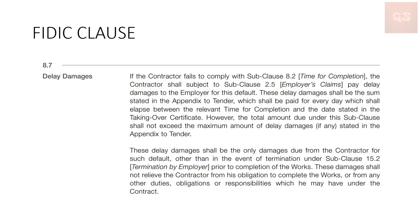Normally the limit will be around 10% of the contract amount. When you fill in the tender documents and the appendix to tender, you can accept the delay damages being put forth by the client. You may also reject it and put forward your own amounts that you think are fair. For example, if the client proposes 0.01% per day and you think that's not fair, you can propose something lesser like 0.005% of the contract amount per day, and mention that in the appendix to tender.